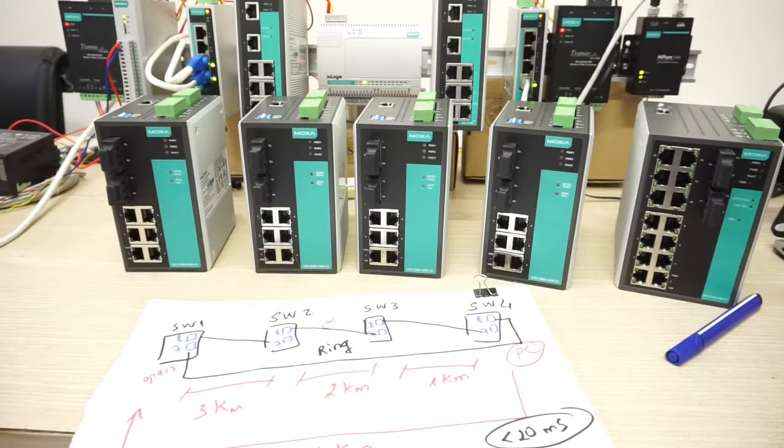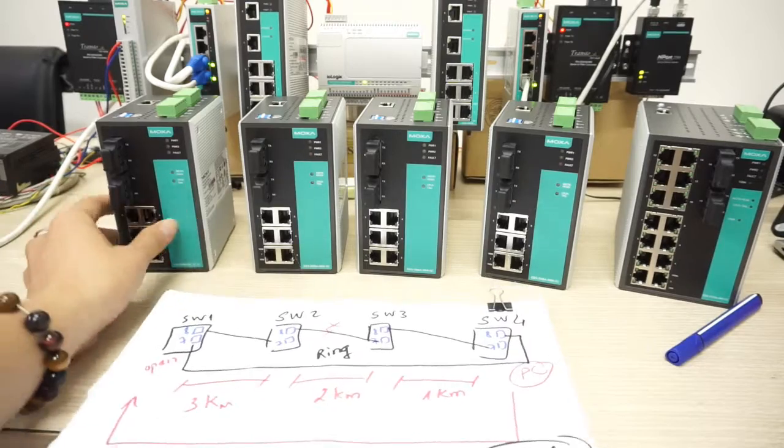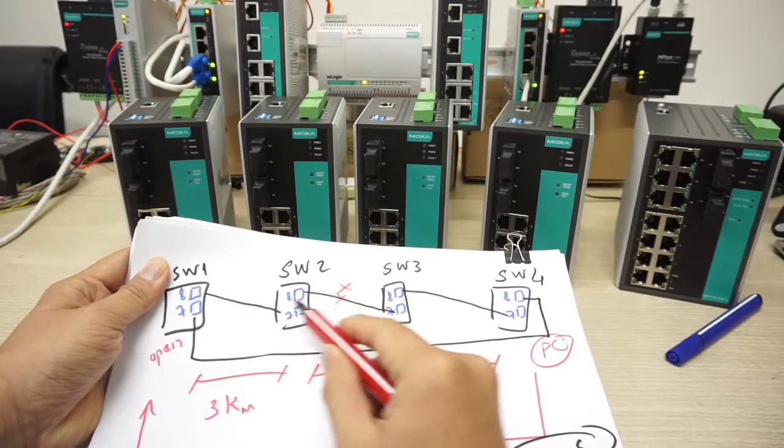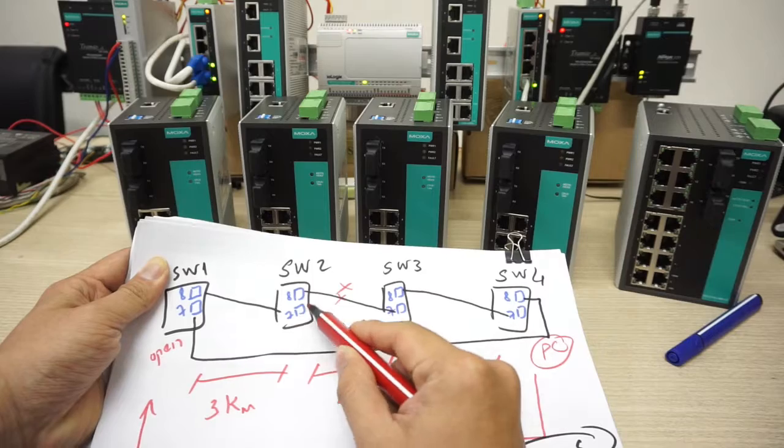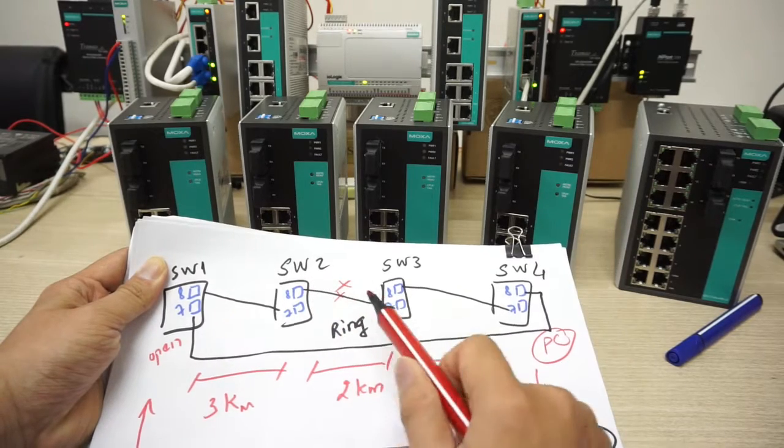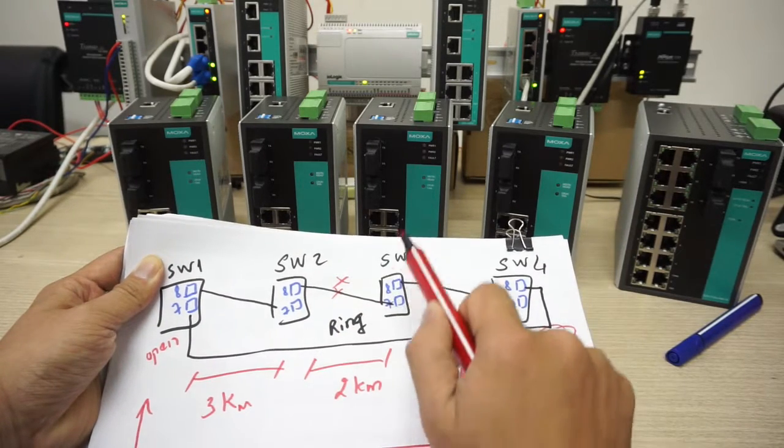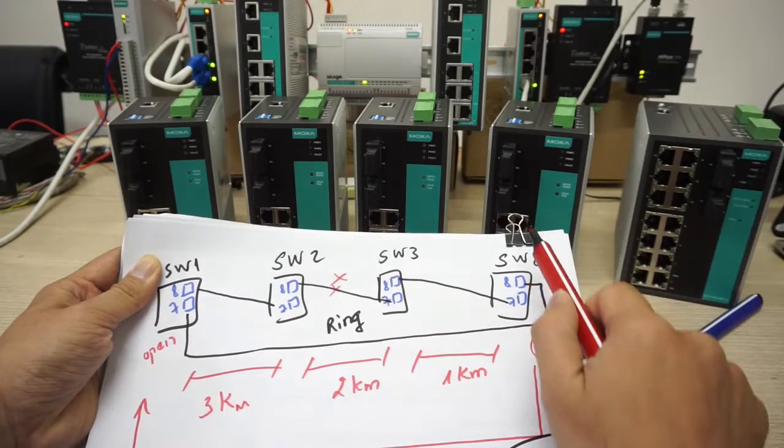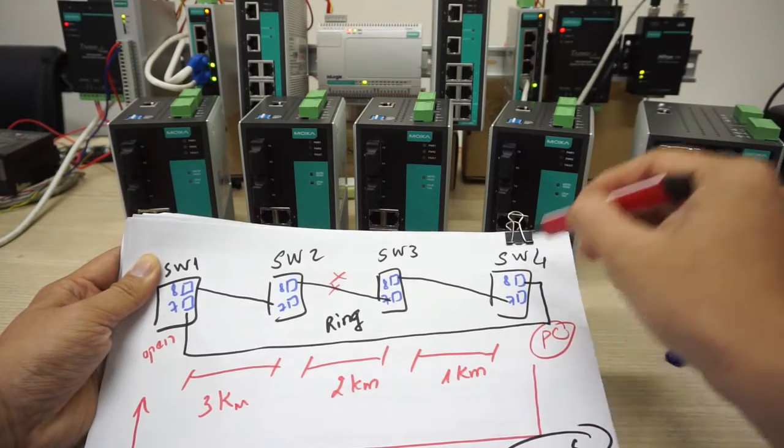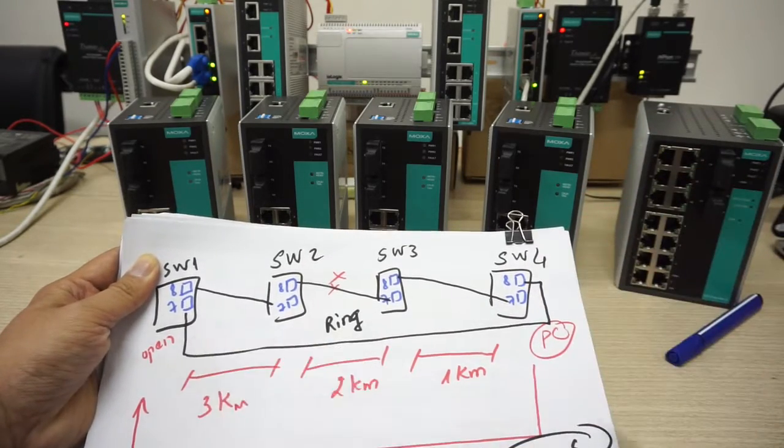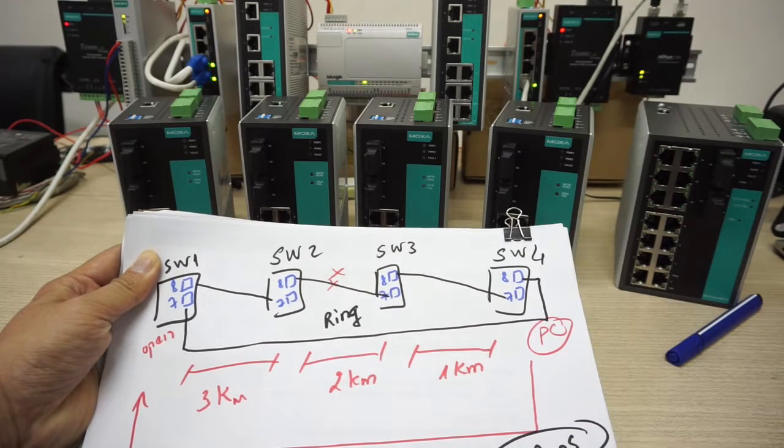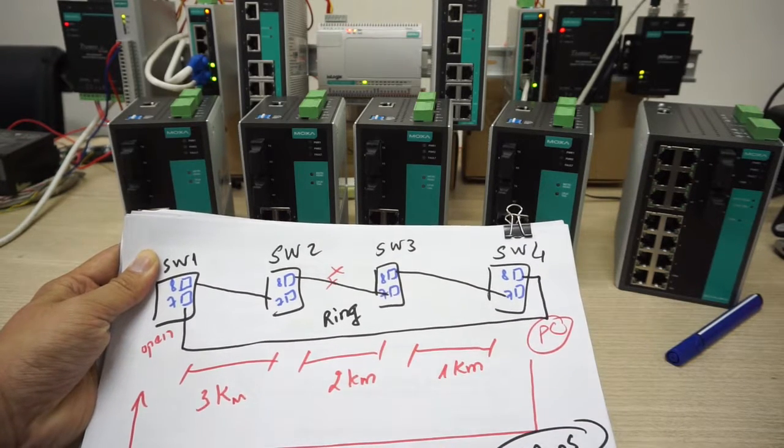I can connect this as the diagram like this. Switch 1, I can use port 8 to port 7 on the next. Port 8 on switch 2 connects to port 7 on 3. Port 8 on 3 connects to port 7 on 4 and back. And port 8 on 4 connects to port 7 on switch 1. So this is the diagram that you can understand.